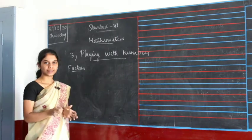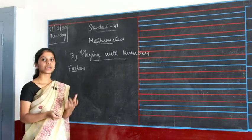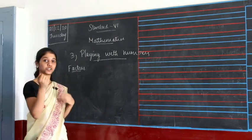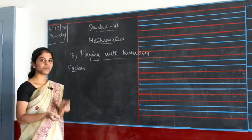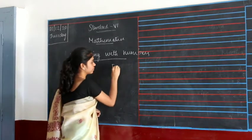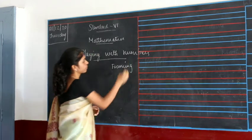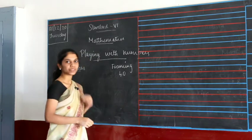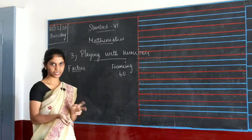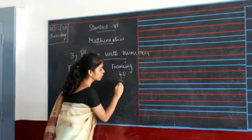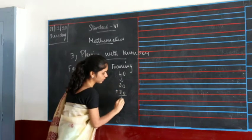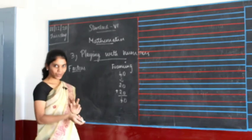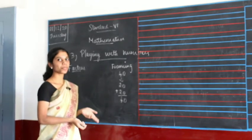Factors is nothing but representation of a number in multiplication. For example, you have seen in your previous class about addition — framing a problem. In that, you would have a sum, for example 40, and you would frame a question: 20 plus 20 gives you 40. This you did in addition. Likewise, we are going to do it in multiplication.